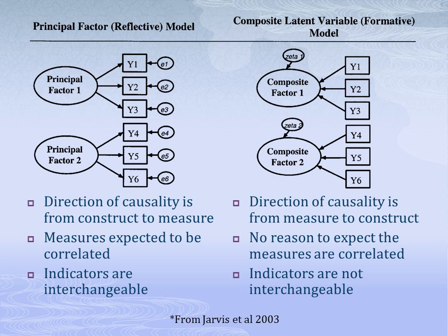That about does it for the different types of variables. The next concept we'd like to discuss is the nature of variables and how observed variables relate to each other and their latent constructs. In these models we have the latent construct on the left, represented by an oval — also sometimes called the latent variable, the unobserved variable, or the factor. The rectangular variables have many names, including items, indicators, measures, or observed variables. Each of these measures corresponds with a specific question or data collection item used during data collection.